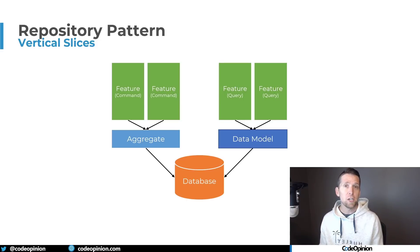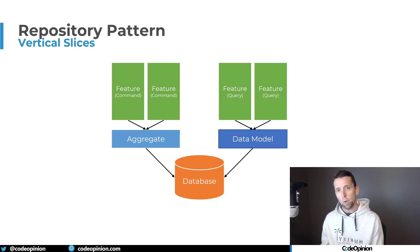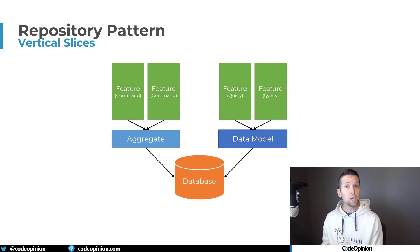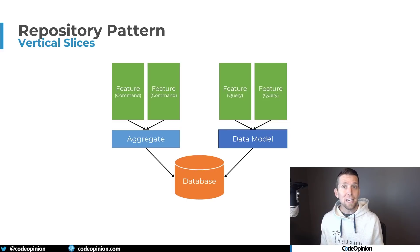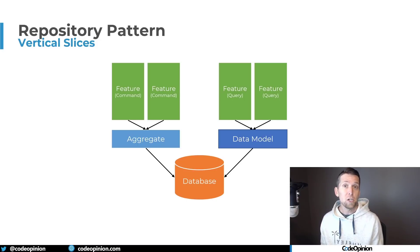One reason you don't need the aggregate in your queries is because an aggregate is a consistency boundary. If your queries aren't performing any state changes, you don't need that consistency boundary. So instead of using the repository to get an aggregate — which includes all the domain objects in that aggregate — you would preferably go directly to the underlying data source and query specifically the data you need, rather than grabbing the entire aggregate when you just want specific data.